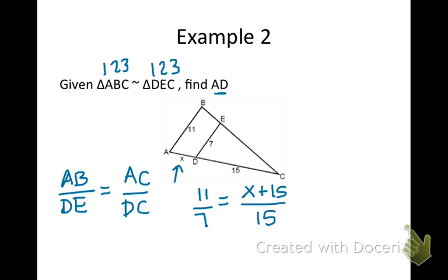So, through cross multiplication, I have an equation that looks like this. 11 times 15 is 165, and then I'm going to be taking 7 times this whole quantity. I have to use the distributive property, make sure I get my notation right here.